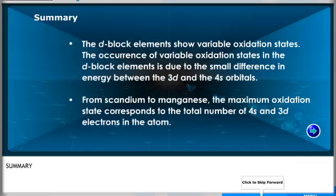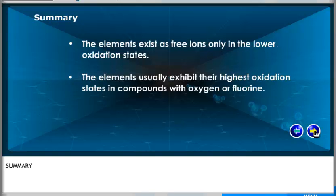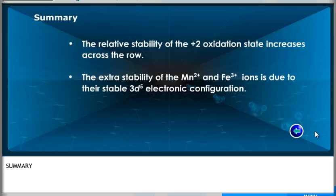Summary: The D-block elements show variable oxidation states. The occurrence of variable oxidation states in the D-block elements is due to the small difference in energy between the 3d and the 4s orbitals. From scandium to manganese, the maximum oxidation state corresponds to the total number of 4s and 3d electrons in the atom. The elements exist as free ions only in the lower oxidation states, and usually exhibit their highest oxidation states in compounds with oxygen or fluorine. The relative stability of the plus 2 oxidation state increases across the row. The extra stability of the Mn²⁺ and Fe³⁺ ions is due to their stable 3d⁵ electronic configuration.